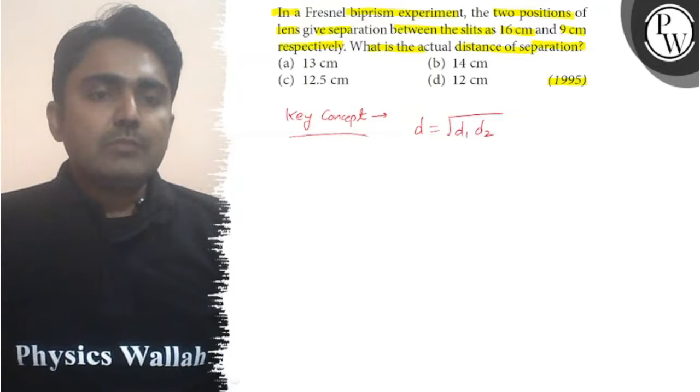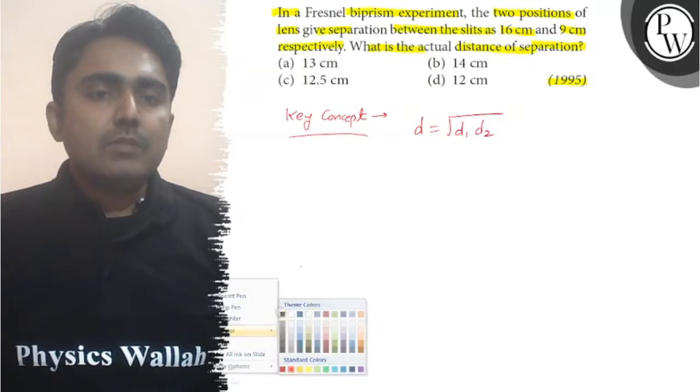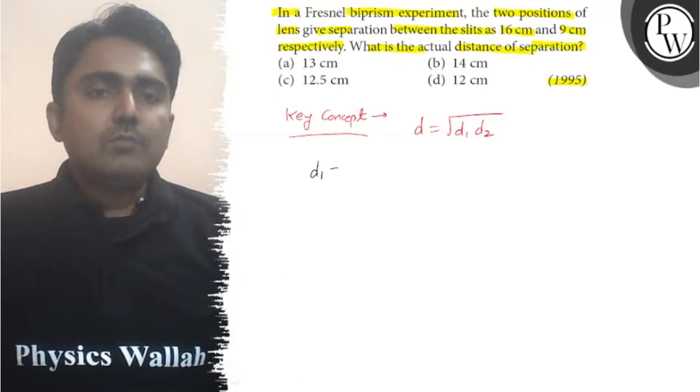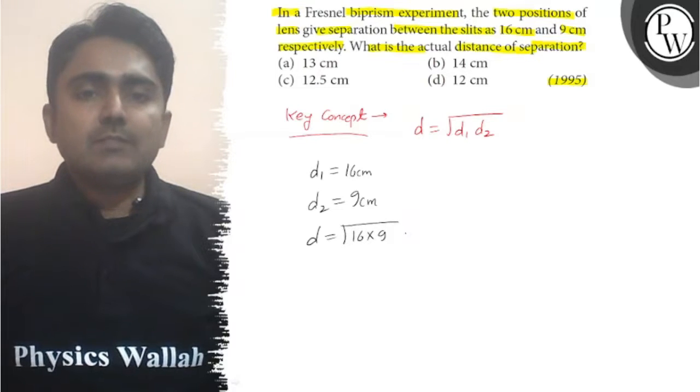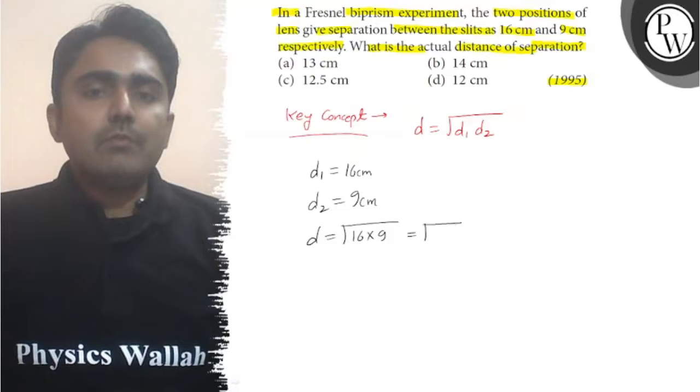According to the question, d1 is 16cm and d2 is 9cm. We can calculate the square root of 16 times 9, which equals the square root of 144cm squared. So d will be 12cm.